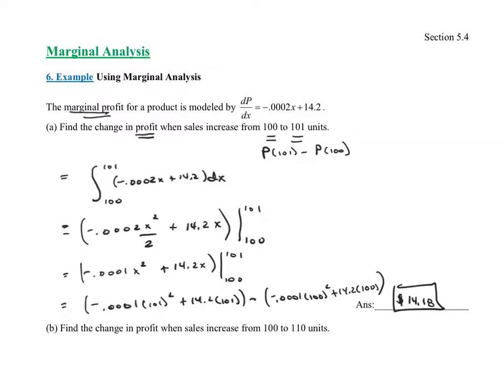This doesn't mean the overall profit is only $14.18 — it means the change in profit. When I sold that single 101st unit, I made $14.18 just off of that 101st unit. That's what that's telling us.